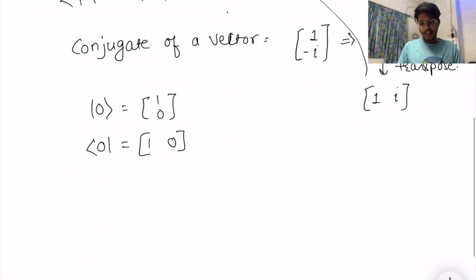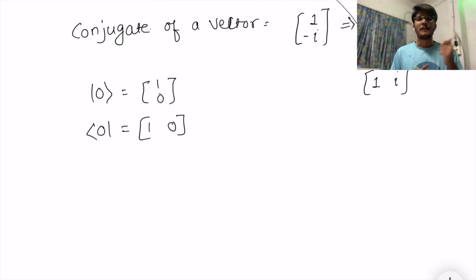So this is how bra and ket Dirac notations are. I know this is overwhelming for you, but don't get stopped here. The full puzzle will get solved later in this video or in upcoming videos. The basic question that must be coming in your mind is why are we even dealing with these vectors? What is the significance and use of it?